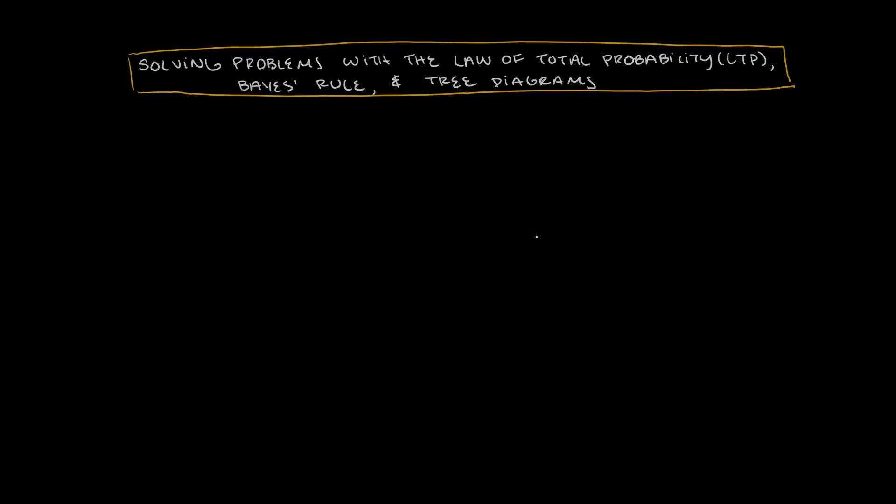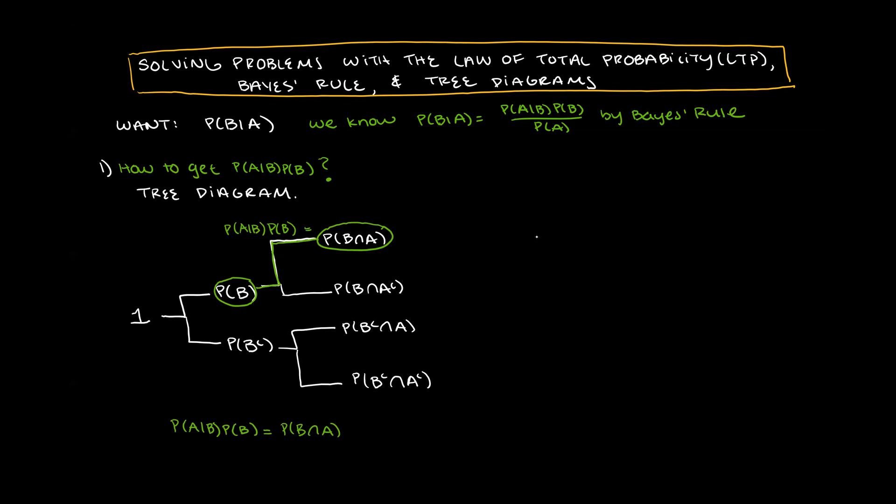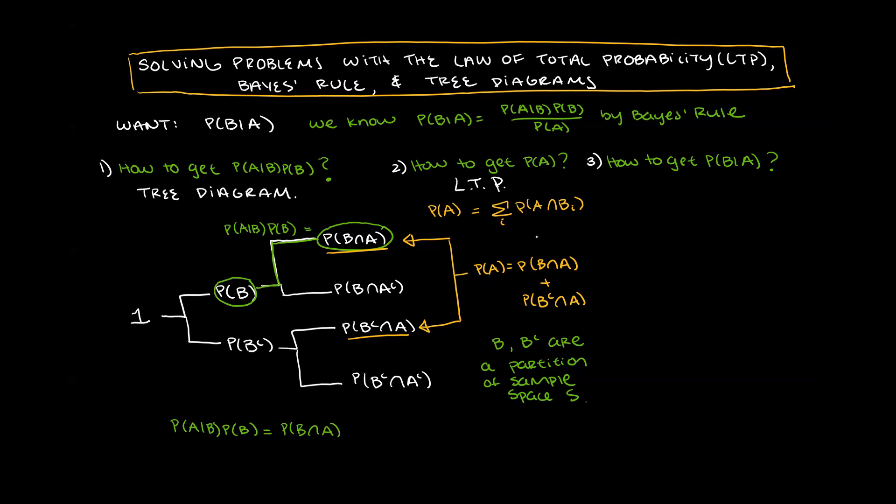So how do you solve a problem using Bayes' rule? Well, usually we want to find the probability of B given A, but we only have information for probability of A given B. With a tree diagram, you can find the probability of A intersect B by multiplying left to right. Then, use the formula for conditional probability to find the probability of A given B is equal to the probability of A intersects B divided by probability of B. And then use the law of total probability to find the denominator of Bayes' rule. Do you see how everything in probability builds on top of one another like Lego bricks?